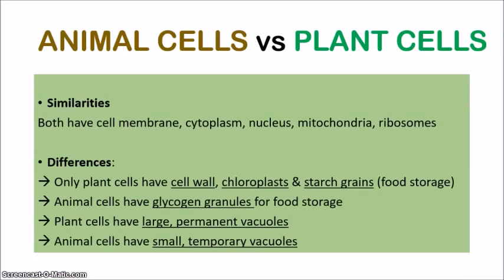Alright, let's look at animal cells versus plant cells. You really need to know the differences between them — both their similarities and what they don't have in common. Similarities: they both have a cell membrane, cytoplasm, nucleus, mitochondria, and ribosomes.